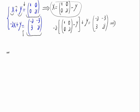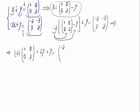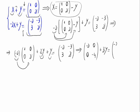Applying the distributive property, we have minus 2 times this matrix, and minus 2 times minus y, plus y, equals minus 2, minus 3, 3, 2. This gives us the matrix: minus 2, 0, 0, minus 4, plus 3y, equals minus 2, minus 3, 3, 2.